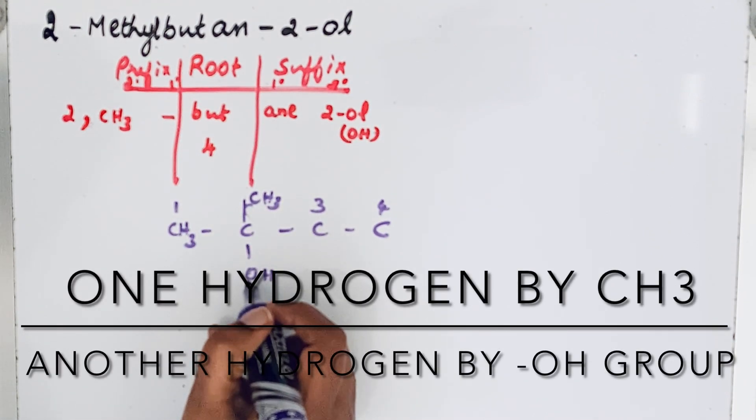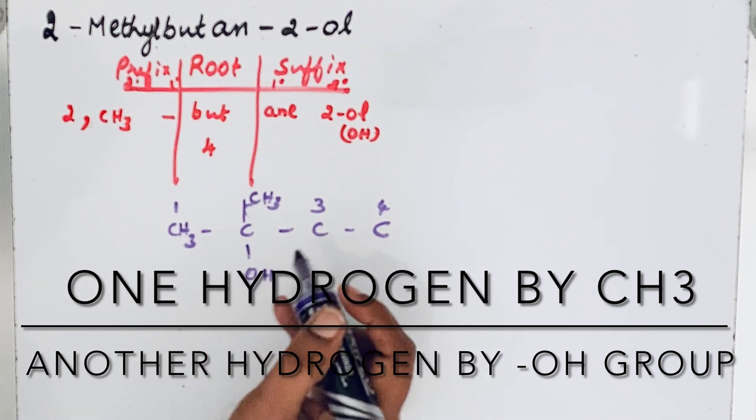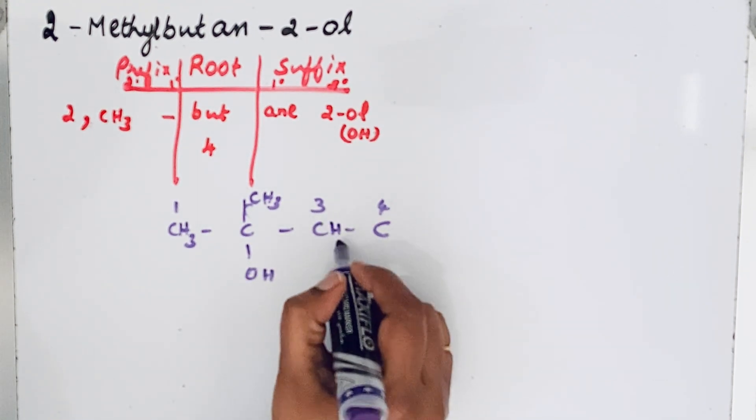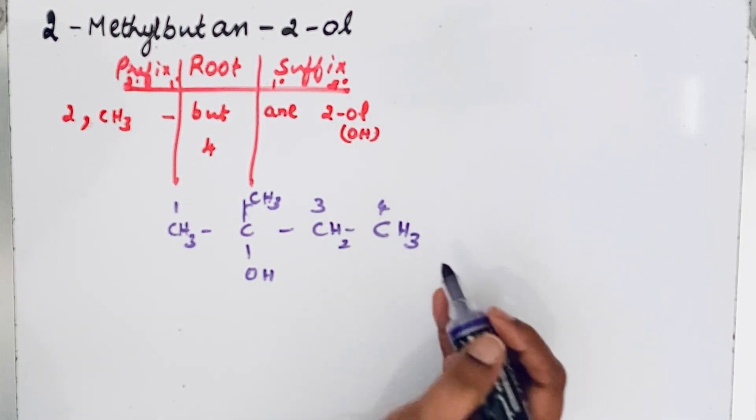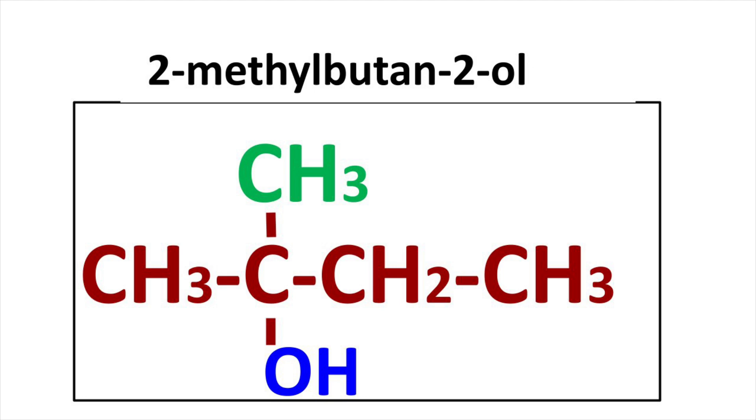Then for the third carbon CH2, then the fourth carbon CH3. So this is the structure of 2-methylbutan-2-ol. Thanks for watching.